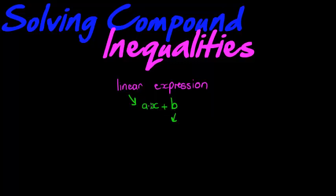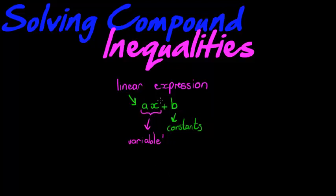The a and b represent numbers and x is our unknown. So it is a linear expression that has constants and variables — or one variable actually — to the power of 1. The highest exponent of the variable is 1.